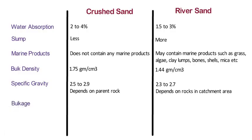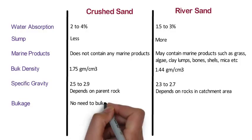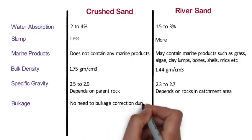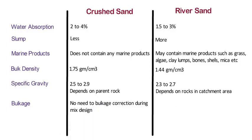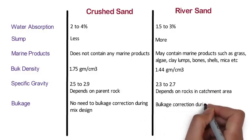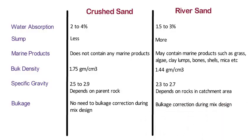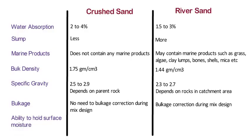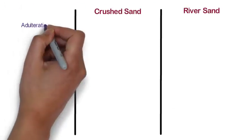Bulking: While using crushed sand in concrete, there is no need for bulking correction during mix design. But while using river sand in concrete, the bulking correction is required during mix design. Ability to Hold Surface Moisture: The ability to hold surface moisture of crushed sand is up to 10%, whereas the ability to hold surface moisture of river sand is up to 7%.